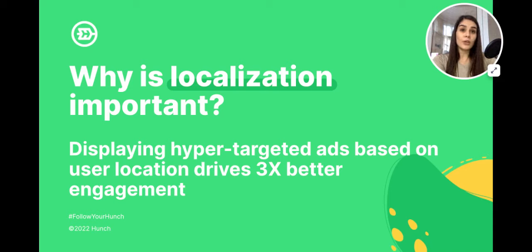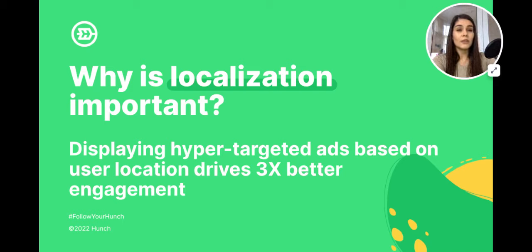Performance marketers already know that local advertising on social works better than global campaigns, because displaying hyper-targeted ads based on user location drives three times better engagement. But if you want to execute a successful localization campaign, you're faced with two basic challenges: how to produce the required number of assets, and how to actually get those ads into a campaign.